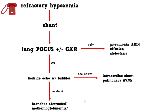You can identify patients with intracardiac shunting or pulmonary AVMs at the bedside, and differentiate between those two pathologies based on when the bubbles show up in the left side of the heart. If your shunt study is negative and there are no bubbles on the left side, you get into a more unusual box — perhaps a strange bronchial obstruction, or possibly methemoglobinemia, which is relatively easy to diagnose once you think about it.